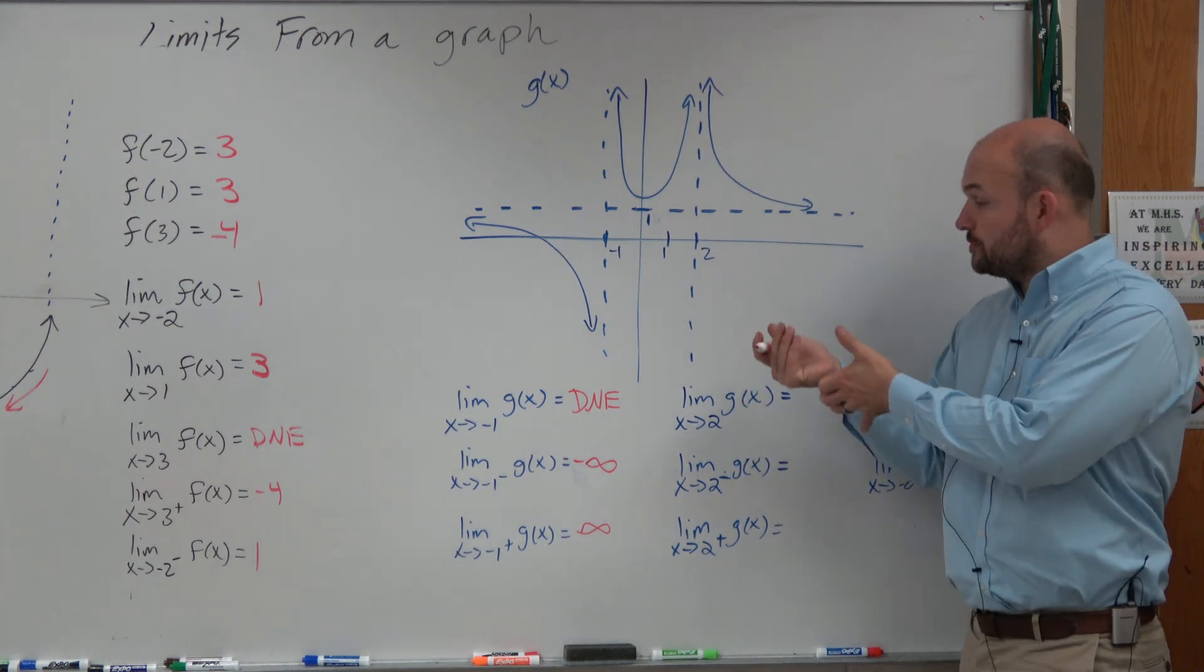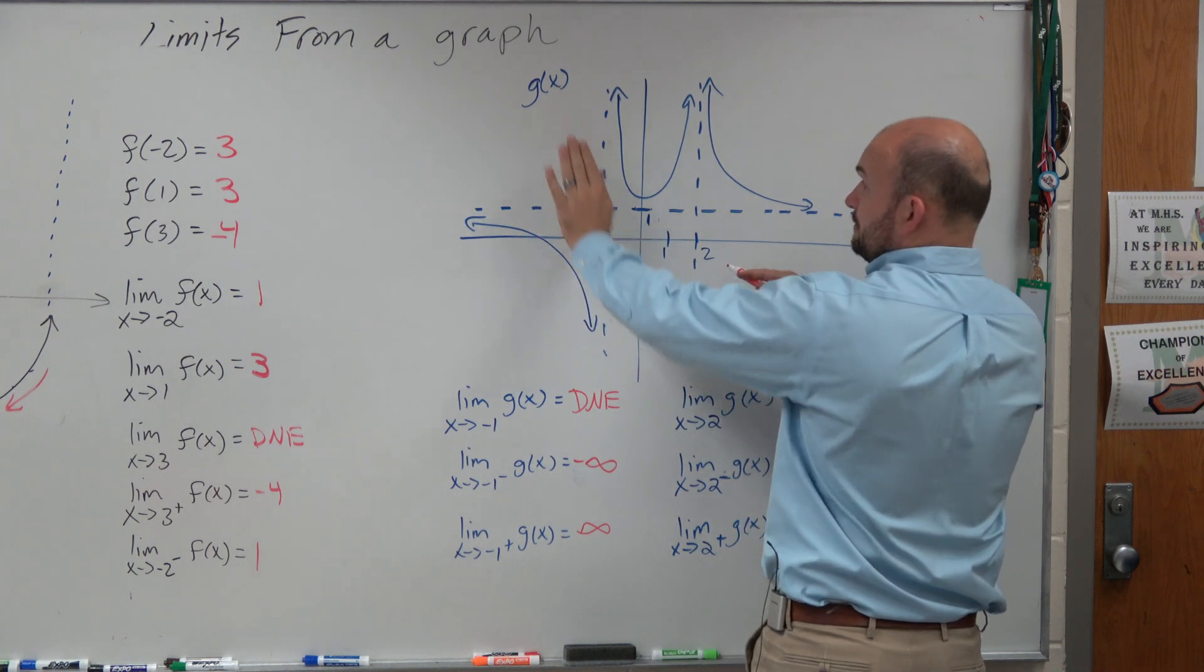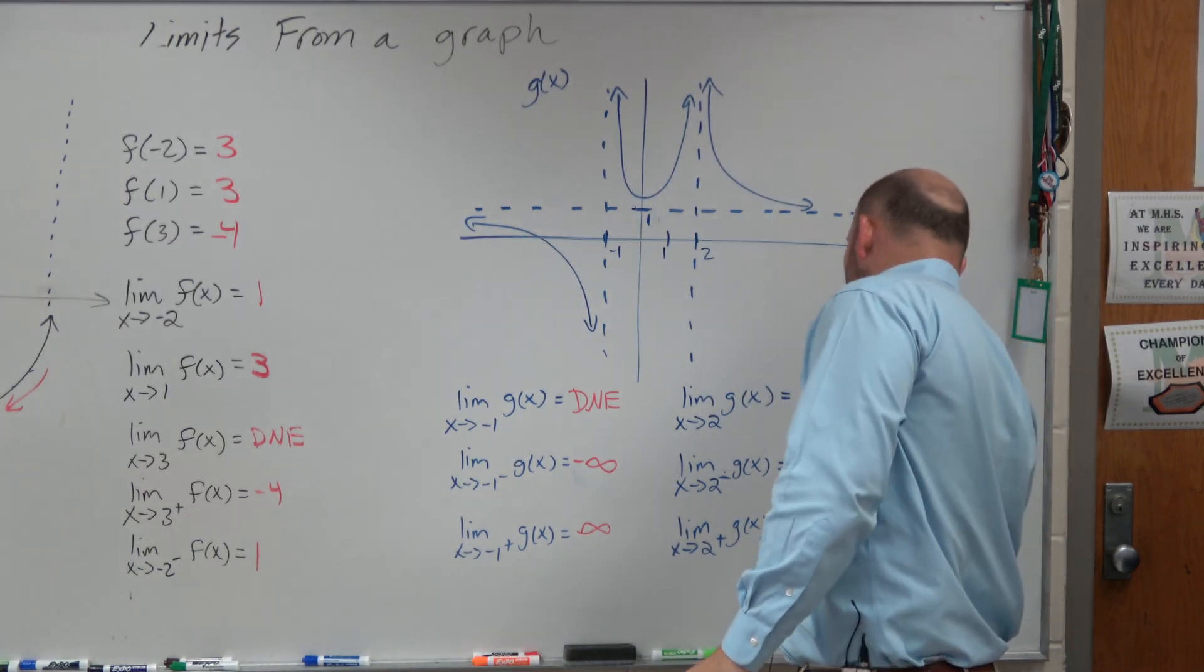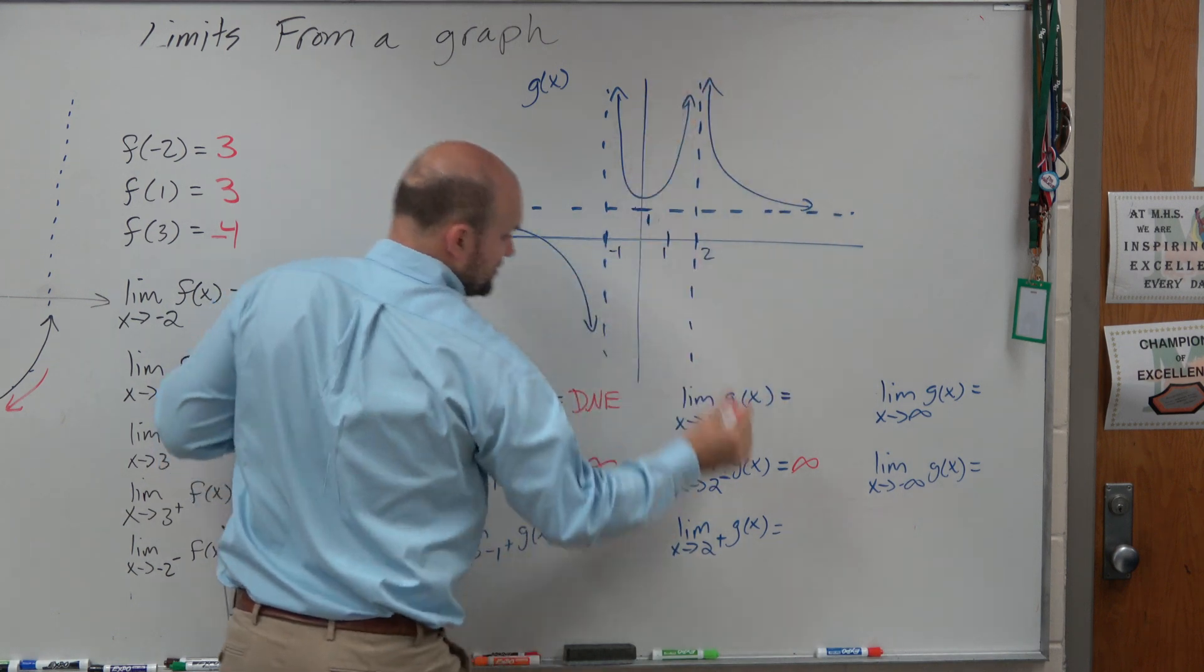If we look at the other asymptote, we can see that from the left, as we get really close to 2 from the left, we're going up to infinity. As we're getting really close to 2 from the right, we're going up to infinity.